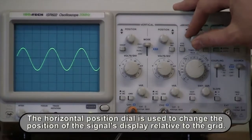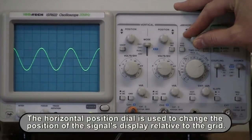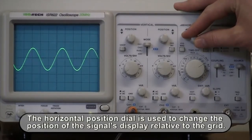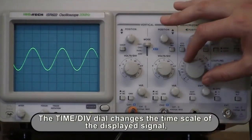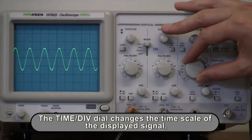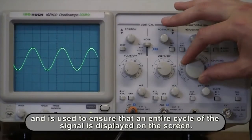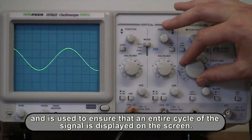The horizontal position dial is used to change the position of the signal's display relative to the grid. The time per division dial changes the time scale of the displayed signal and is used to ensure that an entire cycle of the signal is displayed on the screen.